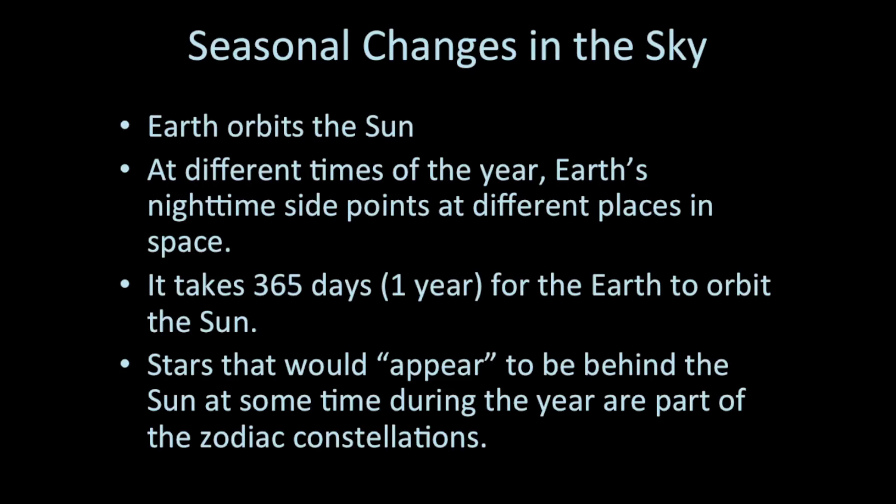And if you could face the Sun and see the stars behind it during the course of the day, the stars that would be behind the Sun during the day are part of star patterns or constellations that are called the zodiac. And there are 13 constellations in the zodiac, so the Sun passes through all of them during the course of an entire year.